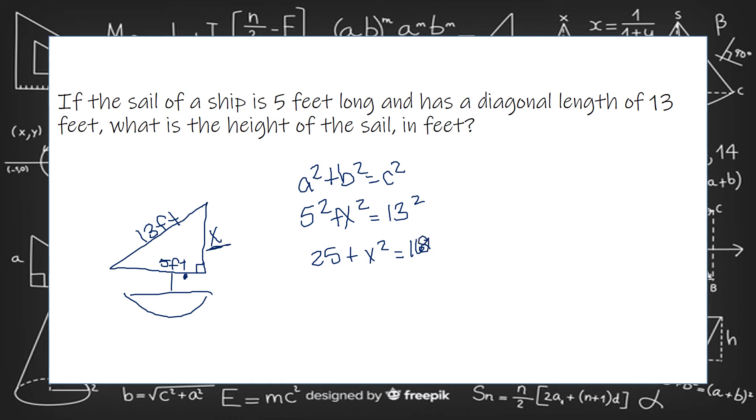So 5 squared is 25, and 13 squared is 169. We have to get the 25 off the left side where it's being added to x. We're going to subtract it from both sides.